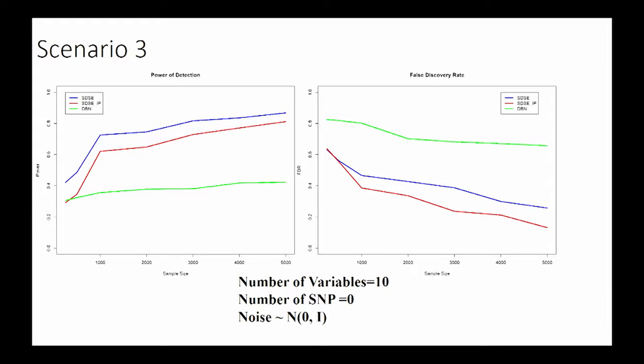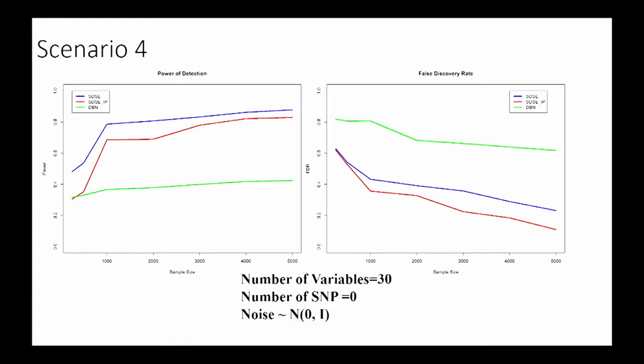The sparse dynamic structure equation model still has very high power, and the SDSE with integer programming is a little bit lower in power but the false detection rate is very, very low. We keep increasing the number of variables and see the pattern is consistent.